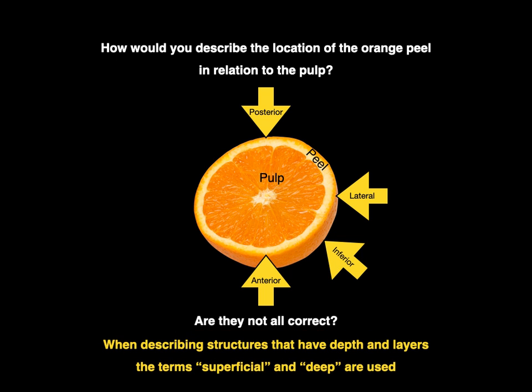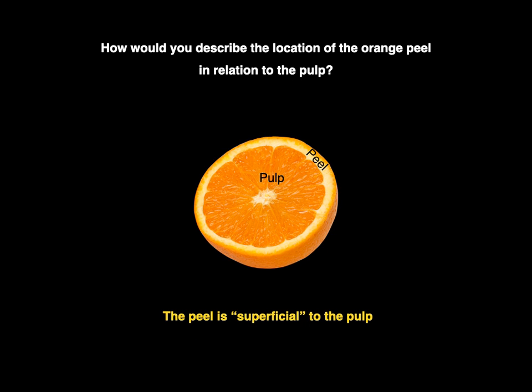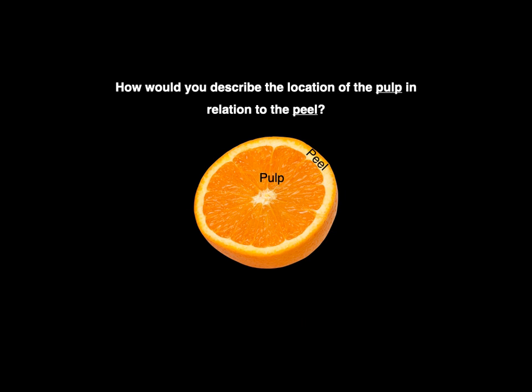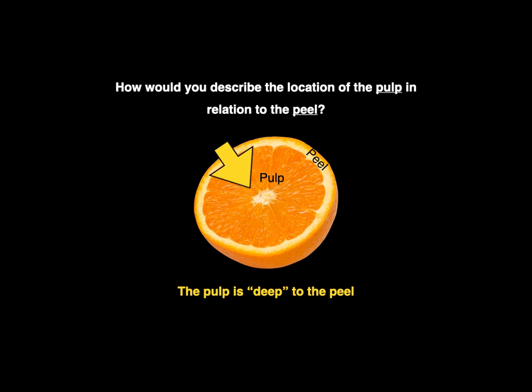When describing structures that have depth and layers, the terms superficial and deep are used. So the peel is superficial to the pulp, because it does not matter where we show the peel — it is always superficial to the pulp. The pulp is deep to the peel because it doesn't matter where we're looking; the pulp is always deep to the peel.